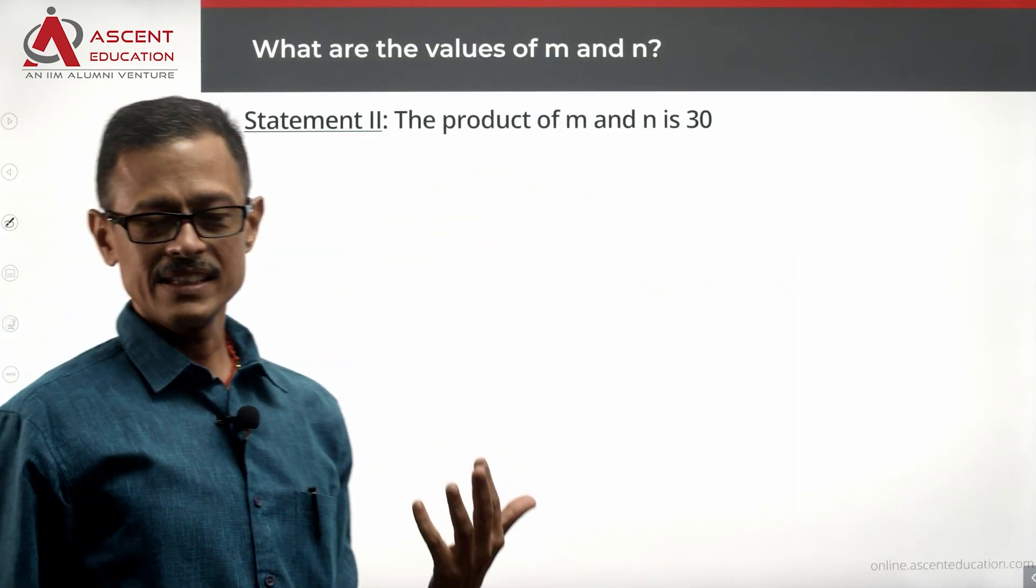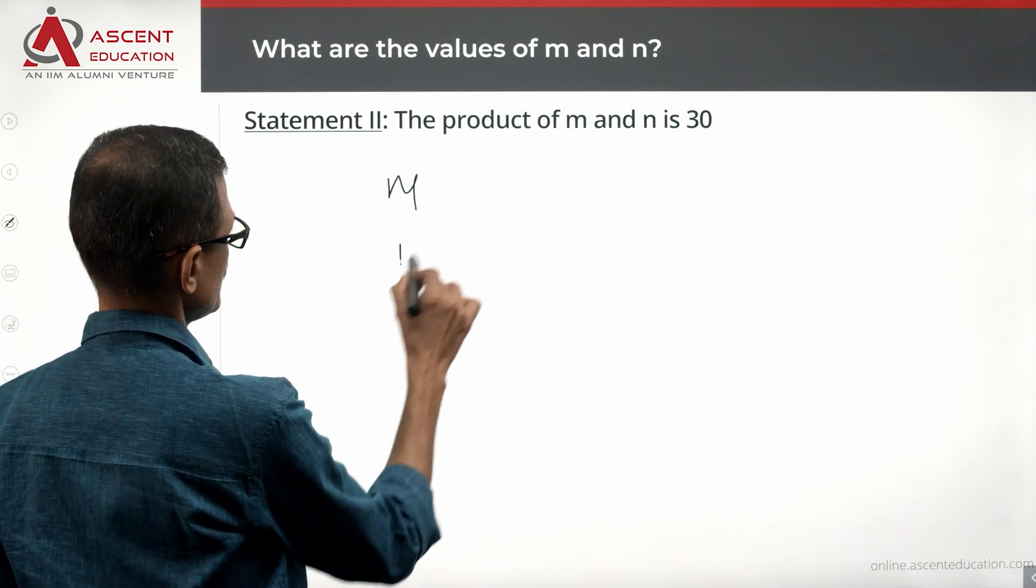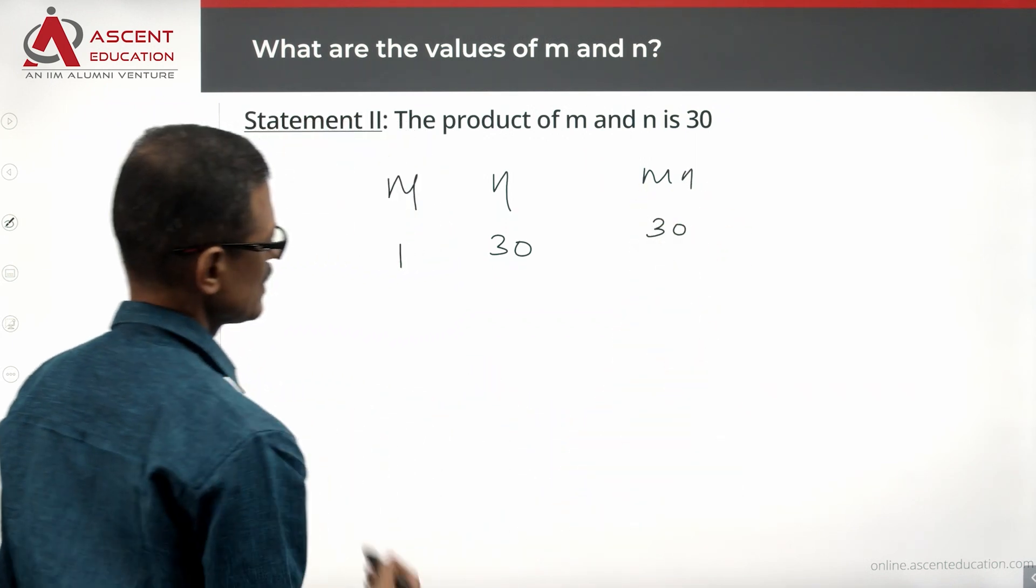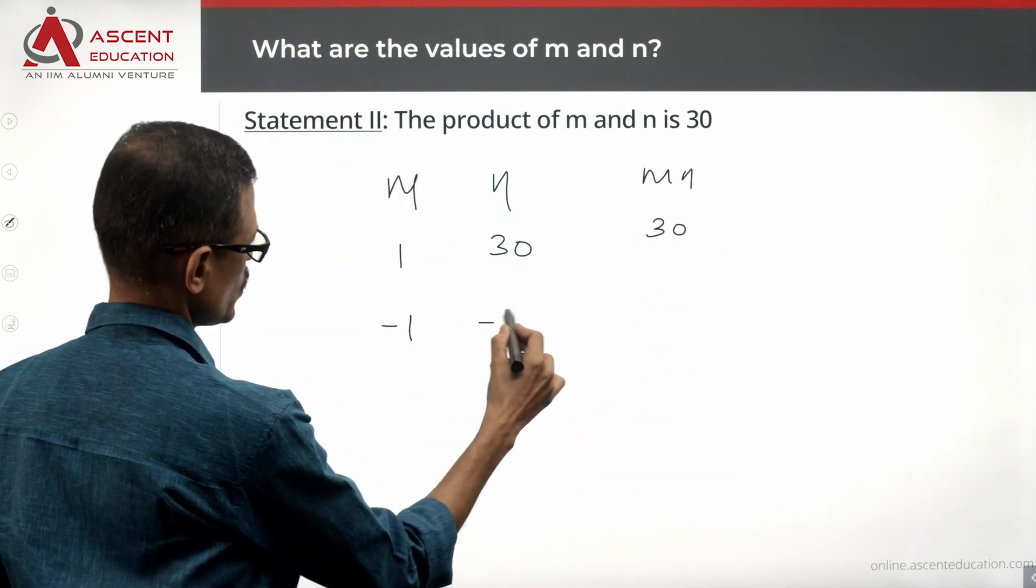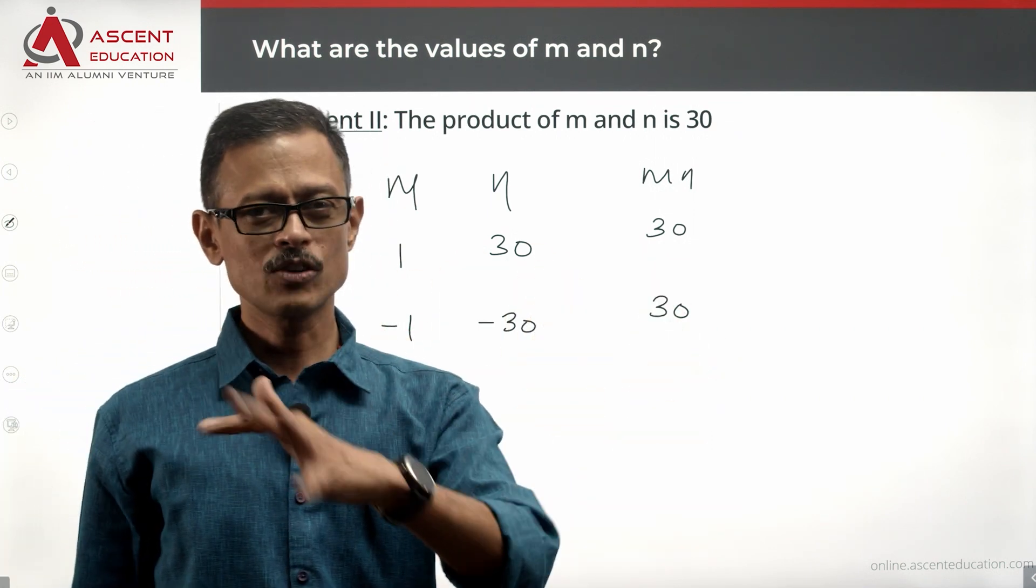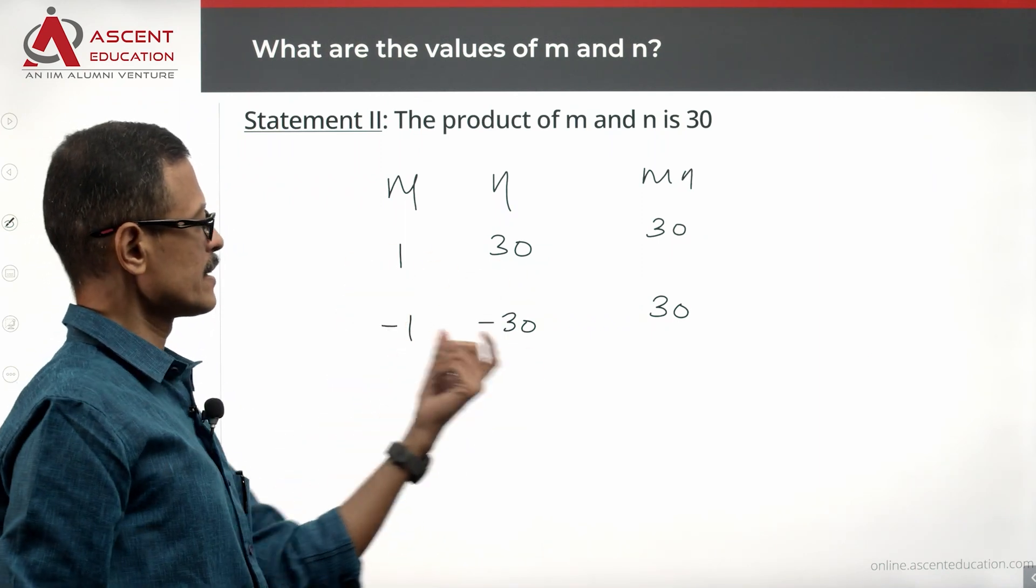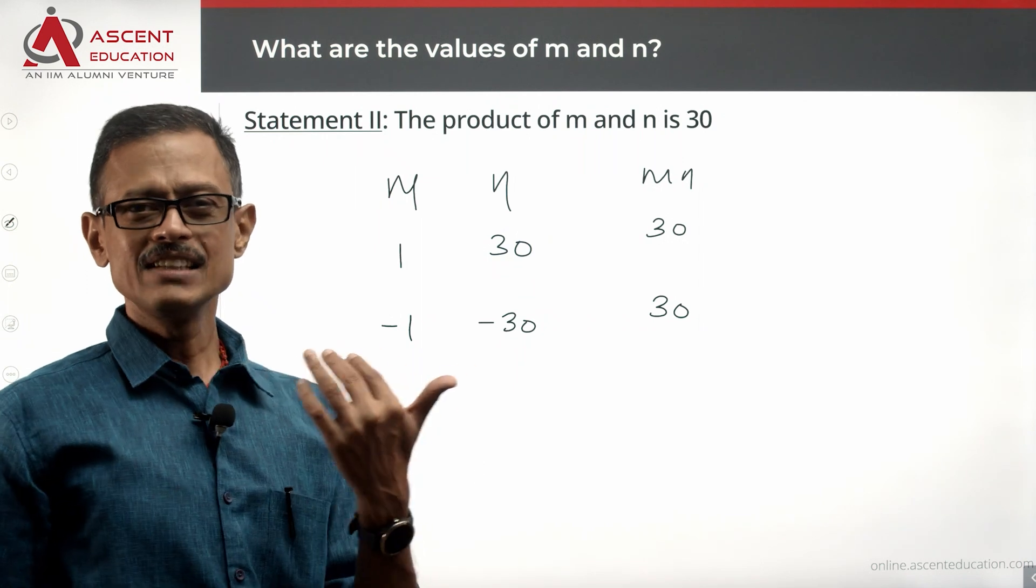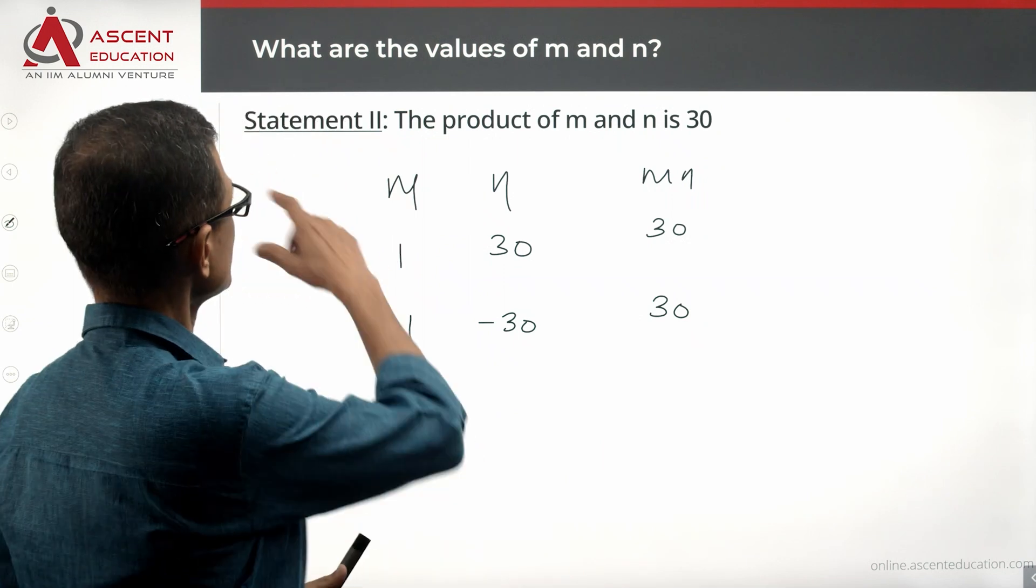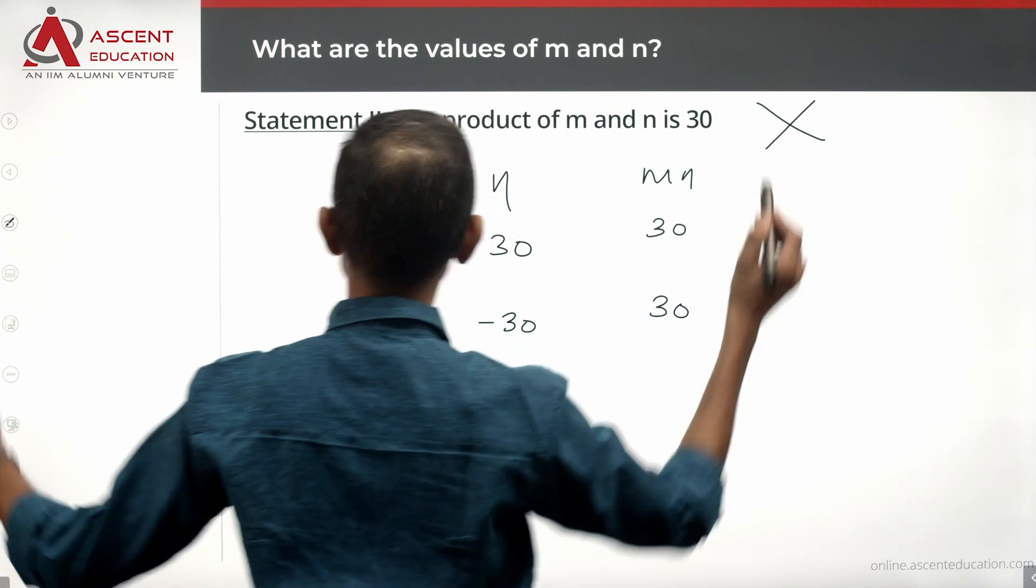The product of M and N is 30. Can we be unique? For example, M could be 1, N could be 30. M into N is 30. M could be minus 1, N could be minus 30. The product is 30. So whether it be 6, 5, 2, 15, without a set of numbers there is minus 1 or minus 30 or 1 and 30. It could be 31, minus 30, minus 1. Not infinite, but quite a lot of possibilities are there. So statement 2 alone is also not sufficient.